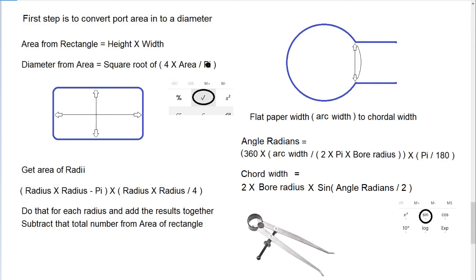Write it down, put that number into your calculator, press the square root button equals, and that is your diameter of the port area converted to a diameter. Then we take the diameter and move on to the pipe calculations, which I will do. But first we're going to go through a couple of other ways and other factors we've got to take into consideration.